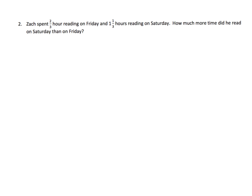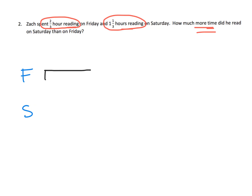Here we have Zach. Zach spent two-thirds of an hour reading on Friday and one and a third hours reading on Saturday. How much more time did he read on Saturday than on Friday? How I think of this problem: we have two characters — Friday and Saturday. I'm going to start by drawing both of those tape diagrams as identical as possible. Whenever I have two subjects like Friday and Saturday, I label them and draw both tape diagrams the same length, then go back and modify as necessary.